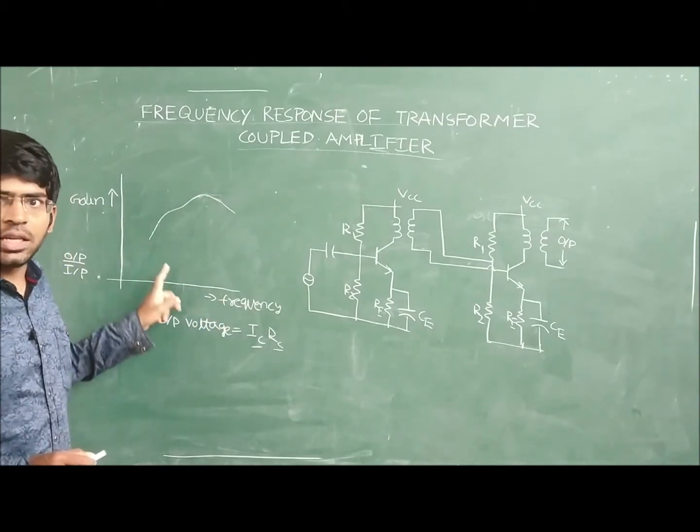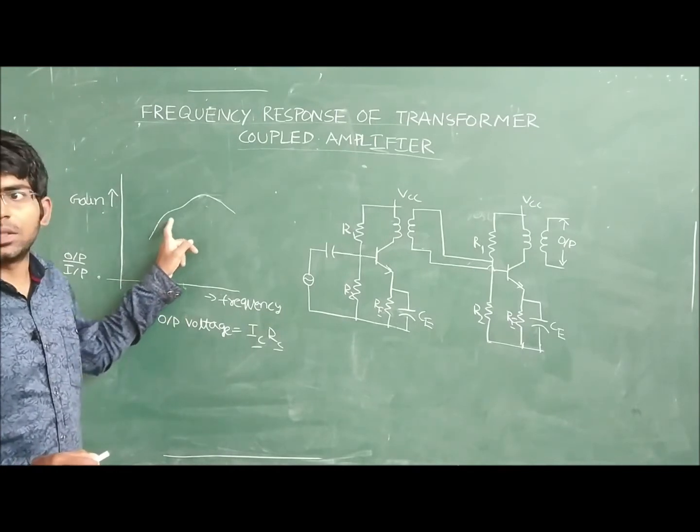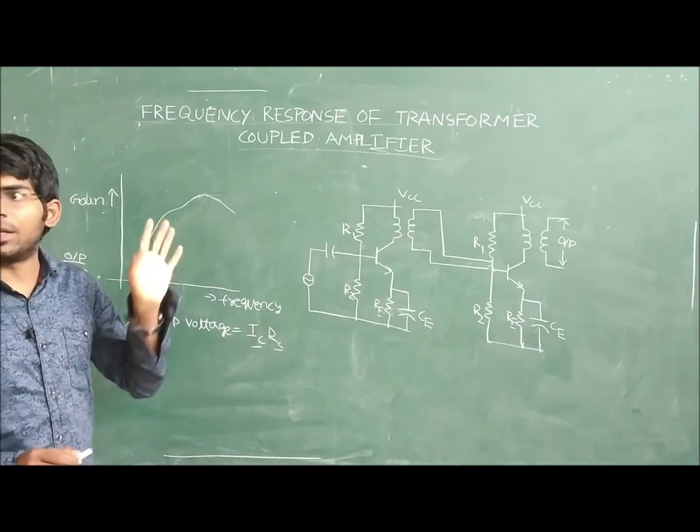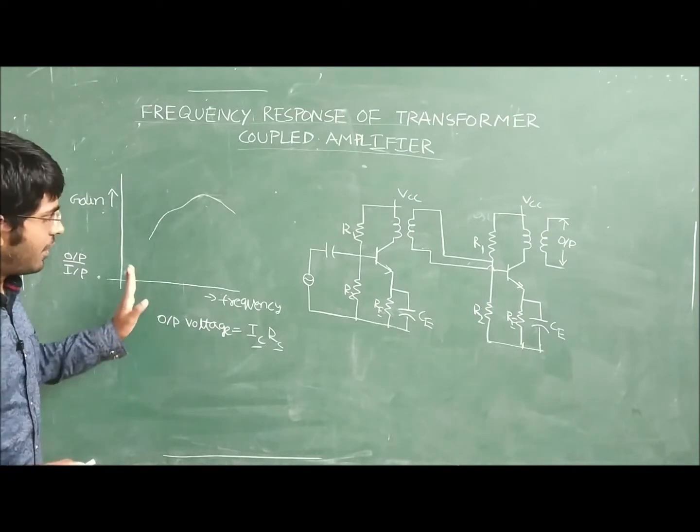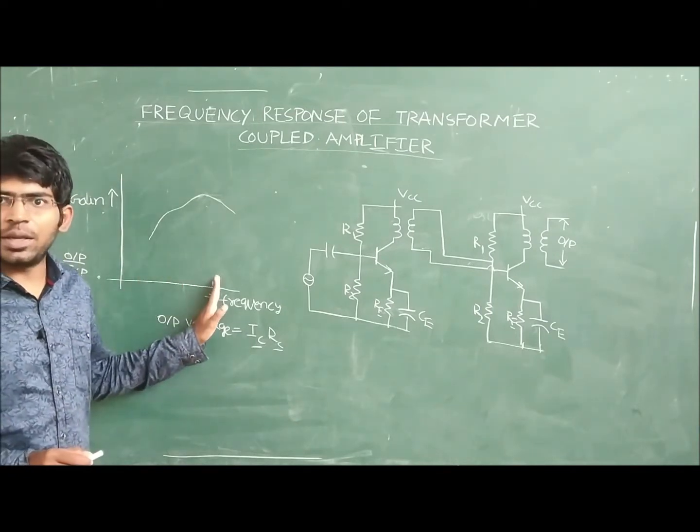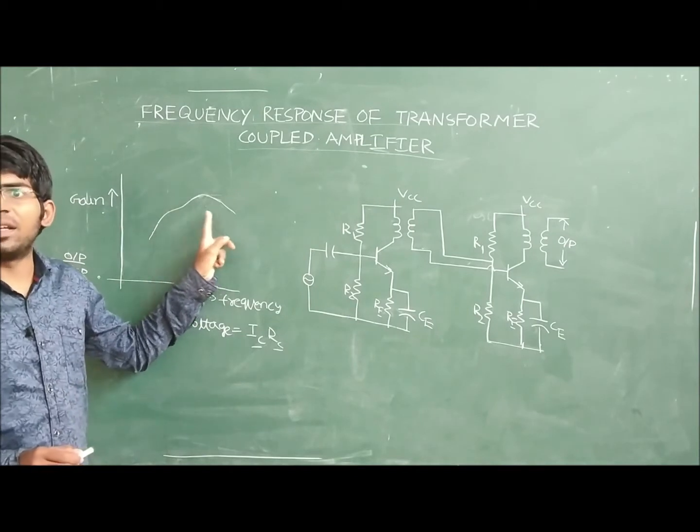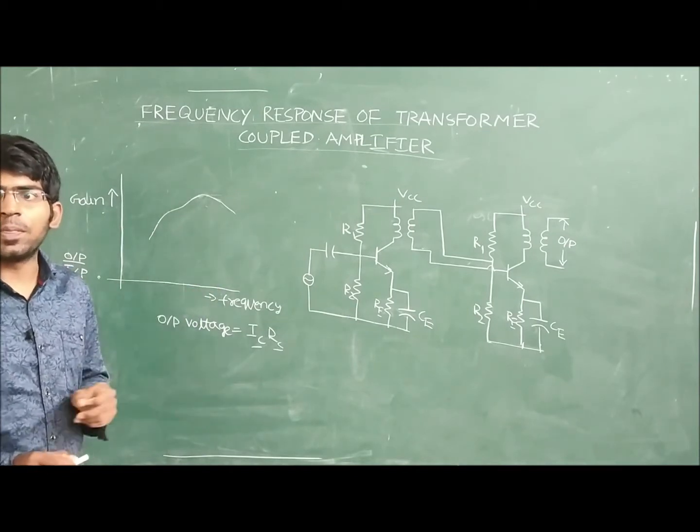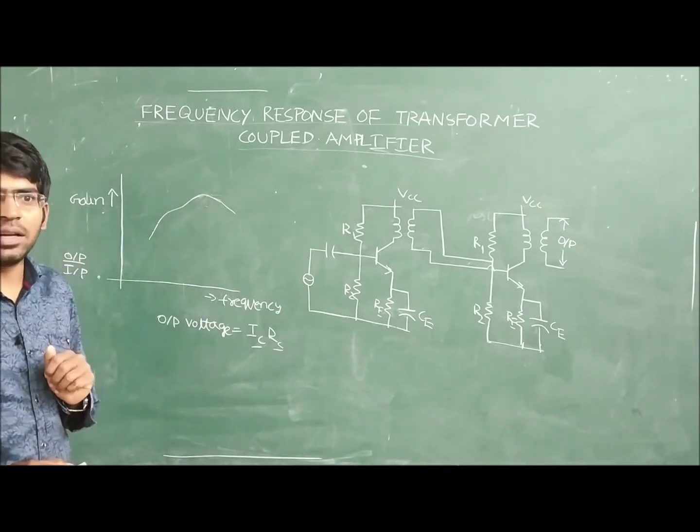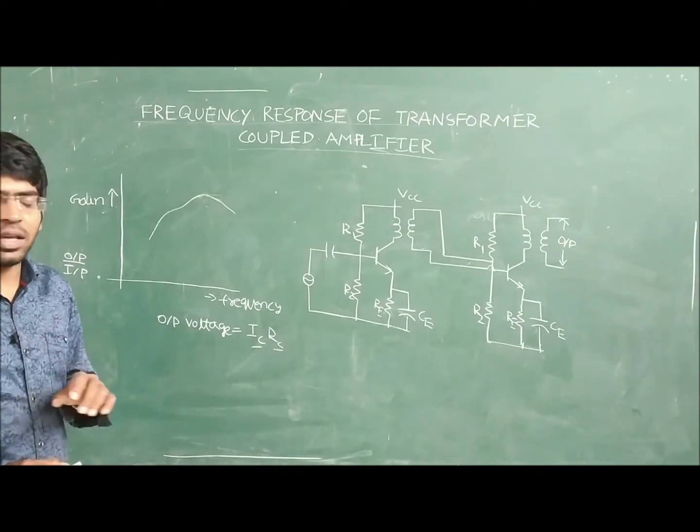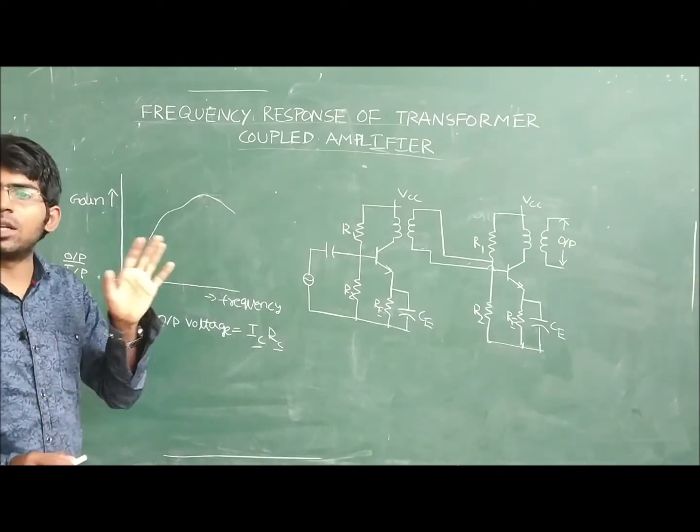In this graph you can observe the frequency response is not constant throughout the range. Whenever we are varying the frequency, the gain is not constant in any range. So that's why this is not the best amplifier when we want a constant gain over a large range of frequencies.